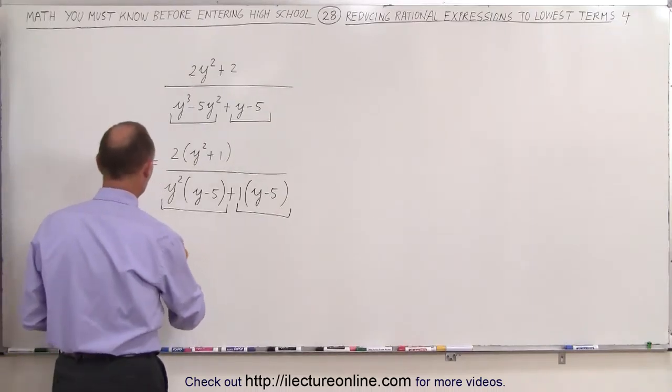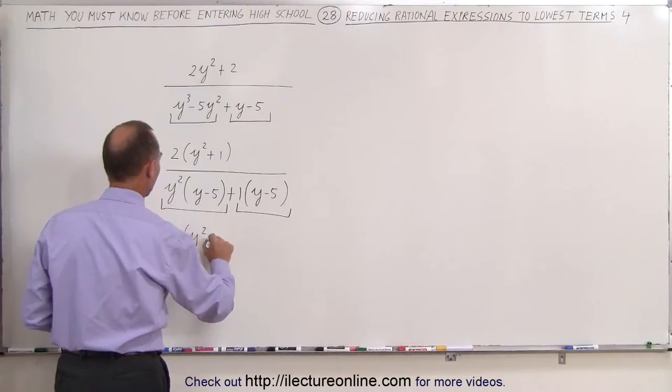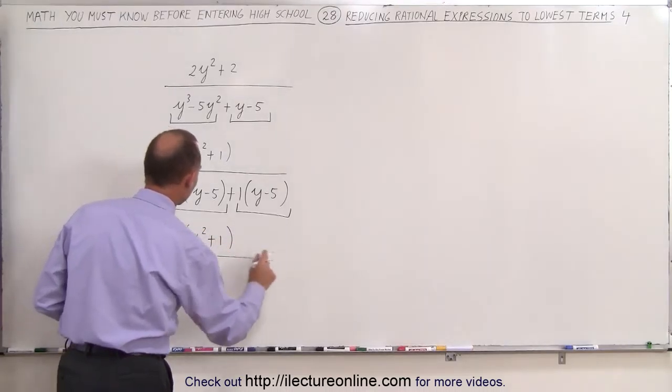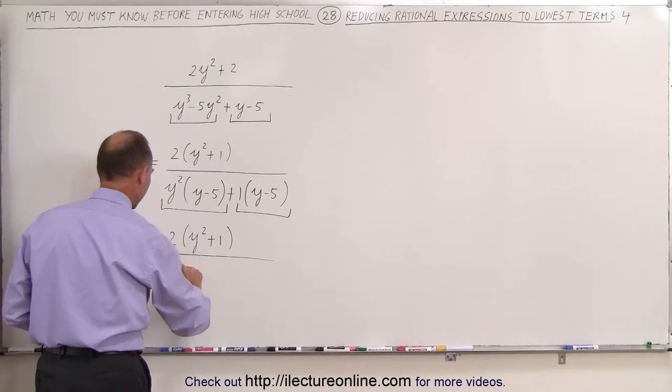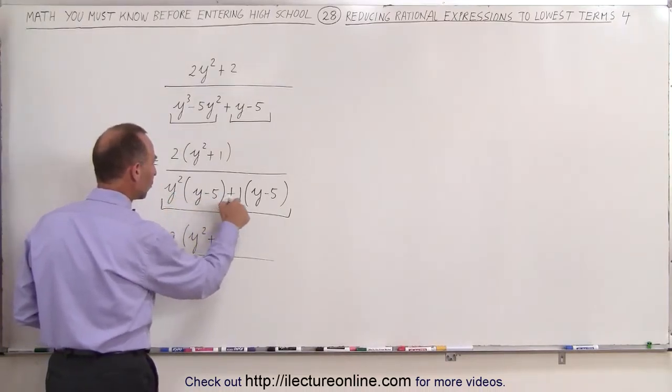When we do that, we get the following. In the numerator, we still have 2 times y squared plus 1. In the denominator, when we factor out y minus 5, you're left with y squared plus 1 again.